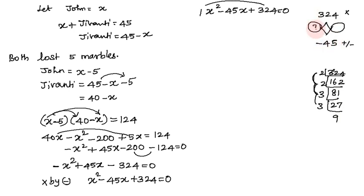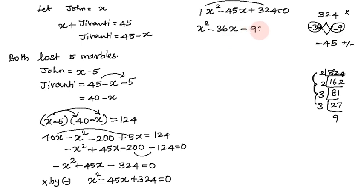Since the middle term is minus 45, both factors are negative: minus 36 and minus 9. Splitting the middle term: x squared minus 36x minus 9x plus 324 equals 0.